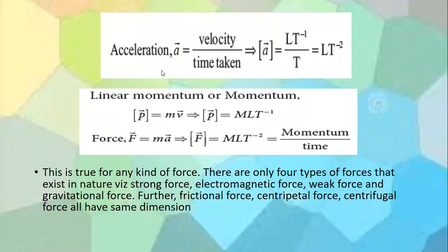Acceleration equals velocity divided by time, so the dimension is LT⁻¹ divided by T, giving LT⁻². Momentum is mass multiplied by velocity, so its dimension is M multiplied by LT⁻¹, giving MLT⁻¹. Force is mass multiplied by acceleration, so its dimension is M multiplied by LT⁻², giving MLT⁻².